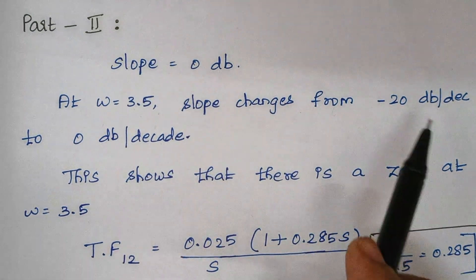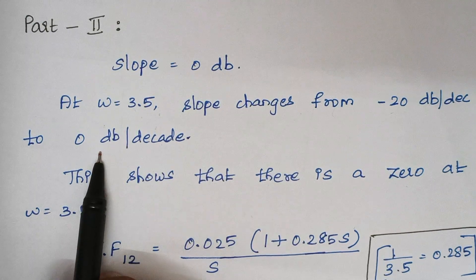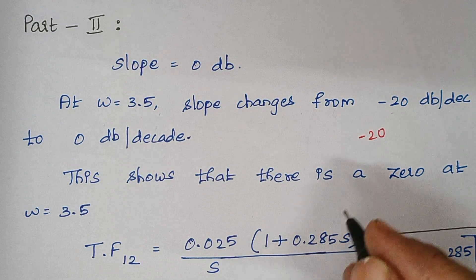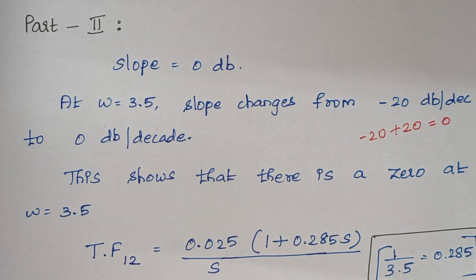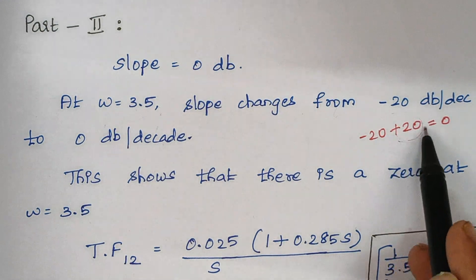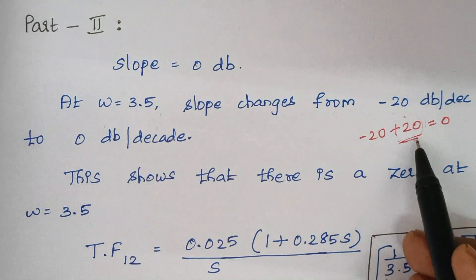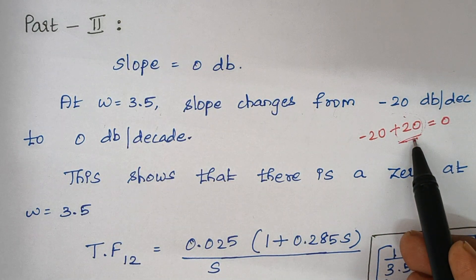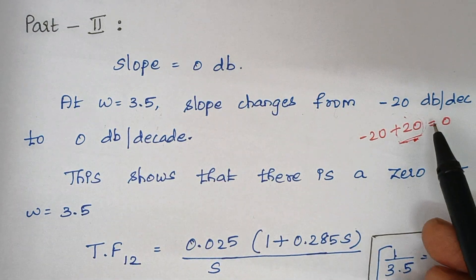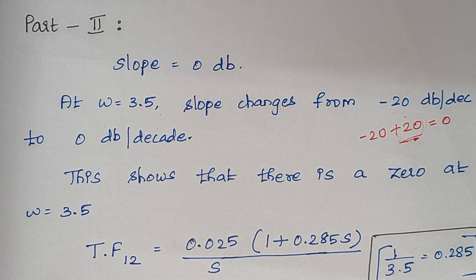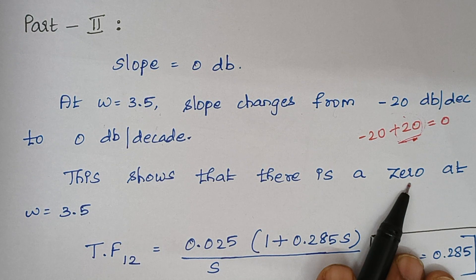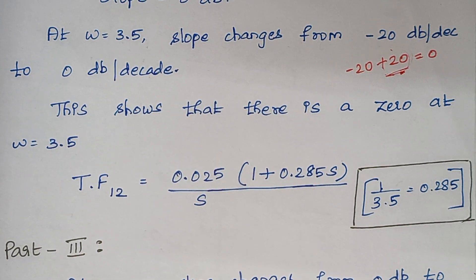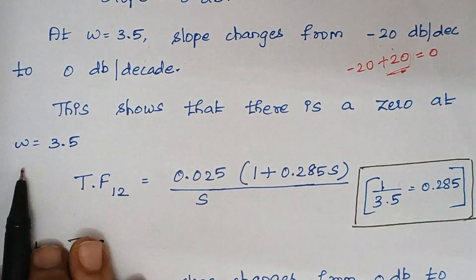Initially the slope is minus 20, and now it is 0. What must be added to minus 20 to make it 0? A plus 20 must be added. Which term contributes this plus 20? A term in the numerator contributes plus 20, because numerator terms contribute a slope of plus 20 and denominator terms contribute minus 20. This indicates there is a zero — zeros are elements present in the numerator — at the frequency of 3.5.